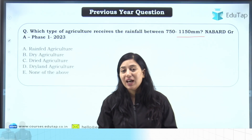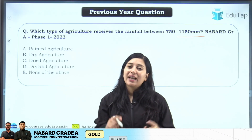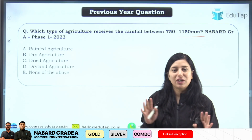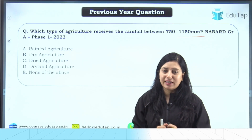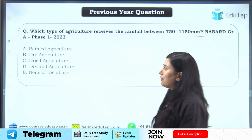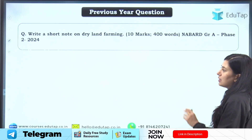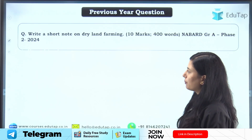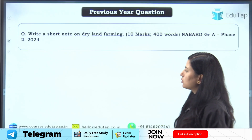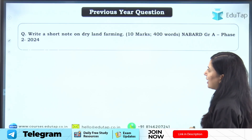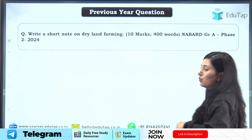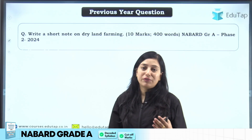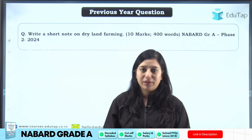The question was: 'Which type of agriculture receives rainfall between 750 to 1150 mm?' Now if you can solve this question right now, well and good, otherwise by the end of this lecture we will be able to answer it. The descriptive question asked from this topic was: 'Write a short note on dryland farming.' You will only be able to write that short note when you know about dryland farming.